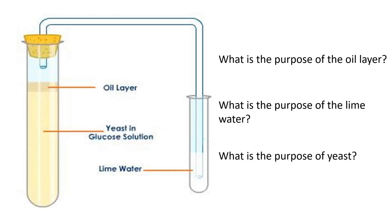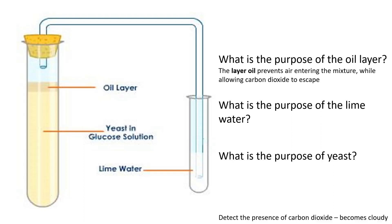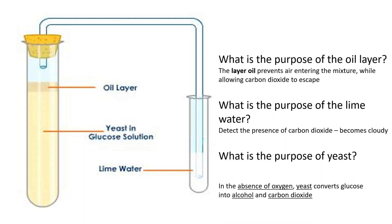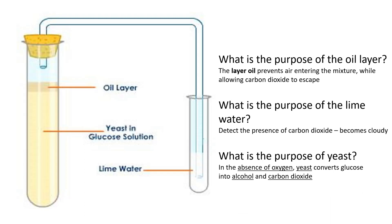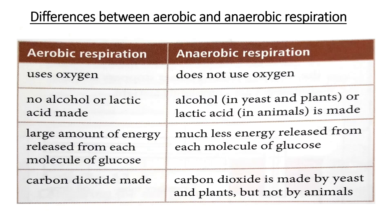Regarding the experiment: the purpose of the oil layer is to prevent air from entering — remember, oil is less dense than water. Lime water is used to test for carbon dioxide, which causes it to turn cloudy. Yeast demonstrates anaerobic conditions, converting glucose into ethanol and carbon dioxide. The key differences between aerobic and anaerobic respiration are: aerobic uses oxygen while anaerobic doesn't; aerobic produces no alcohol or lactic acid while anaerobic does; aerobic releases more energy while anaerobic releases less; and carbon dioxide is produced in aerobic respiration, but in anaerobic respiration only yeast produces carbon dioxide, not animals.